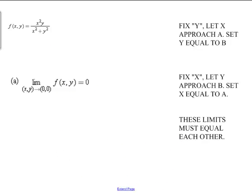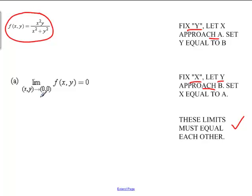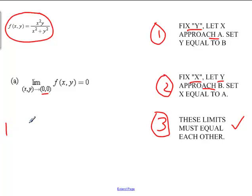So let's look at how we do this with two variables. The idea is we fix the y variable and let x approach a, then fix the x variable and let y approach b, and make sure the limits equal each other. For this example, we want to show that the limit as (x, y) approaches (0, 0) of our function approaches zero.